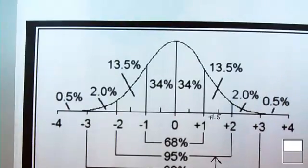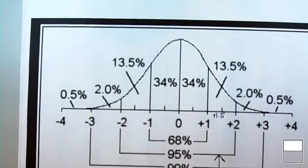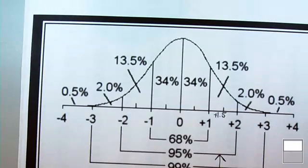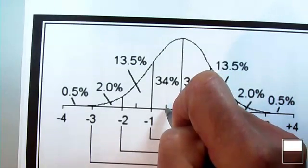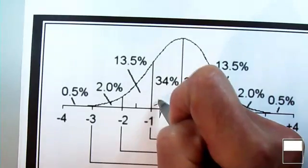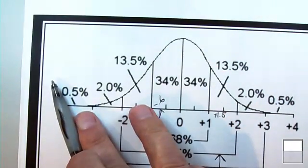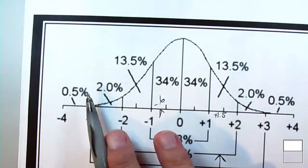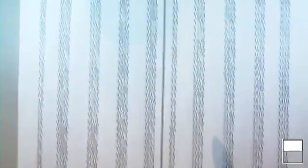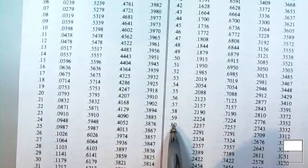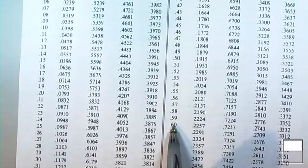Let's say we're concerned about what proportion of scores are below a z-score of negative 0.6. Here we have a z-score of 0, here we have 1, so negative 0.6 is about here. We're concerned with the smaller portion since we want to know what's below. We go to our normal curve table, look for a z-score of 0.6, and looking at the smaller portion, a z-score of negative 0.6 has approximately 27% of the scores below it.